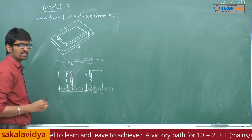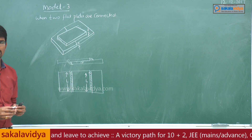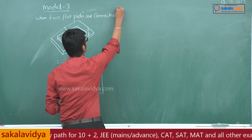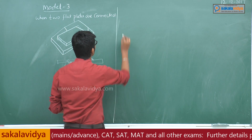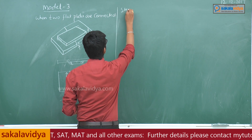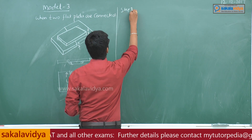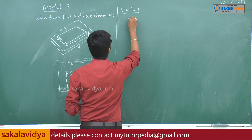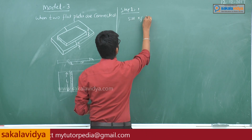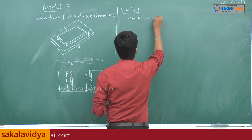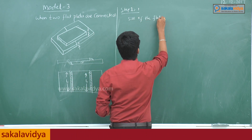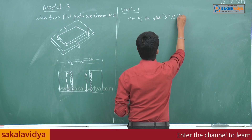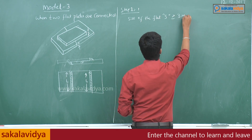So, what is the first step in the design process of two flat plates connected together? The first step — Step 1 — is that the size of the plate, or the weld, must be greater than or equal to 3 mm.